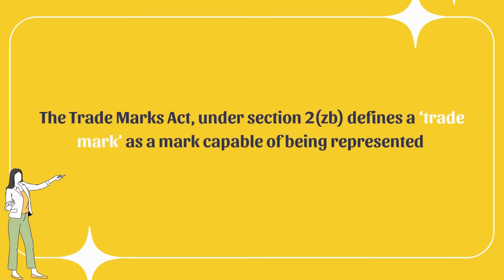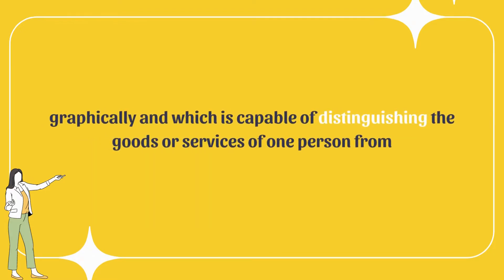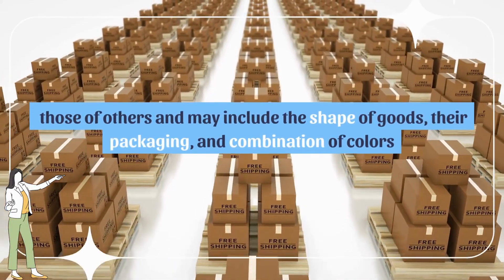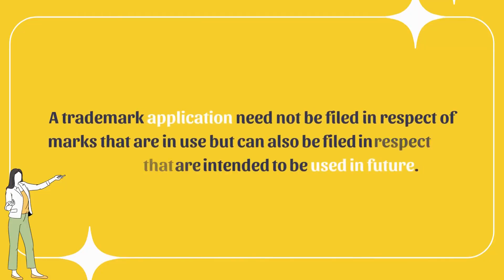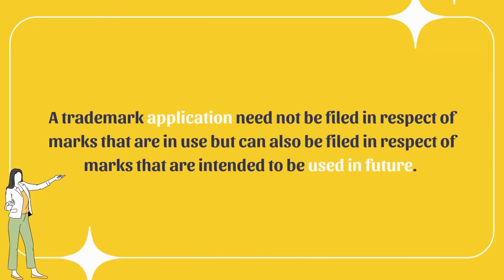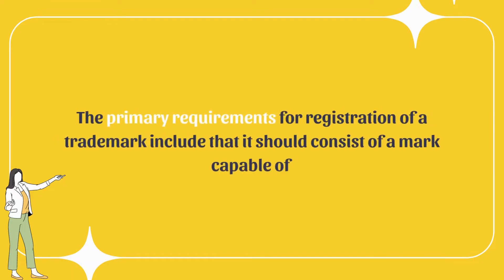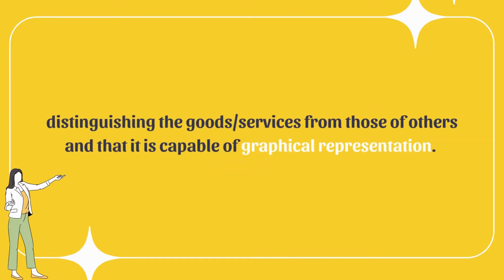A trademark may include the shape of goods, their packaging, and combination of colors. A trademark application need not be filed only for marks already in use but can also be filed for marks intended to be used in future. The primary requirements for registration include that the mark should consist of a mark capable of distinguishing the goods or services from those of others, and that it is capable of graphical representation.